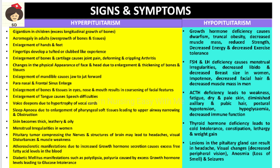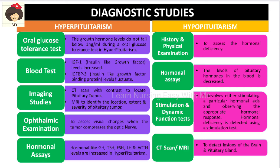Adrenocorticotropic hormone deficiency causes weakness, fatigue, dry and pale skin, diminished axillary and pubic hair, postural hypotension, decreased blood sugar, and decreased immune response. Thyroid hormone deficiency causes cold intolerance due to decreased BMR, constipation, lethargy, and weight gain. Lesions in the pituitary gland can cause headache, visual changes, anosmia (loss of smell), and seizures.